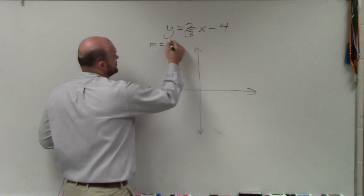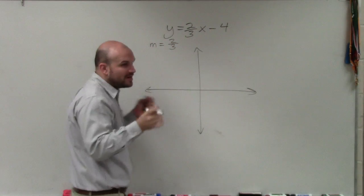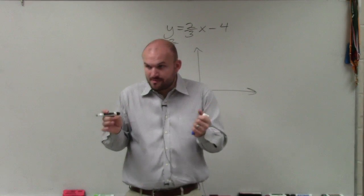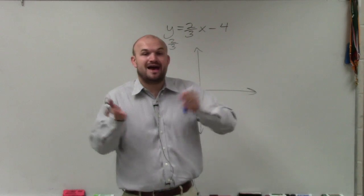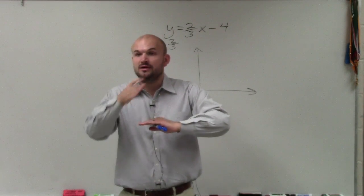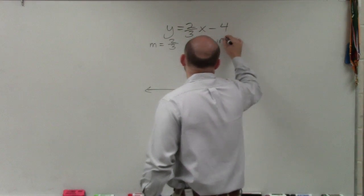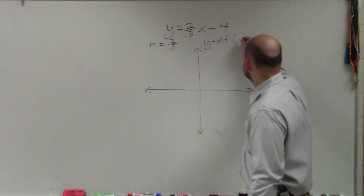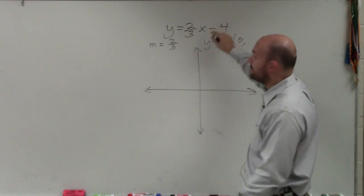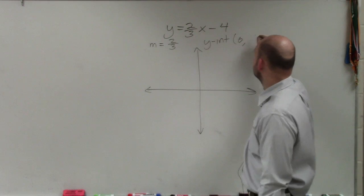So the slope, in this case, is 2 thirds. Remember, always write your slope as a fraction. So if you have the slope as a whole number, put it over 1 so it represents a ratio. The y-intercept, I want to write it as a coordinate point. And it's always going to be 0 comma the value of b, which in this case is negative 4.